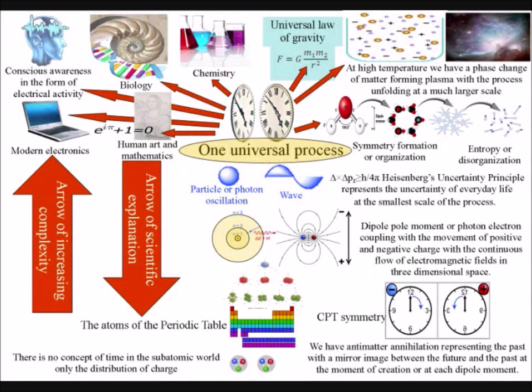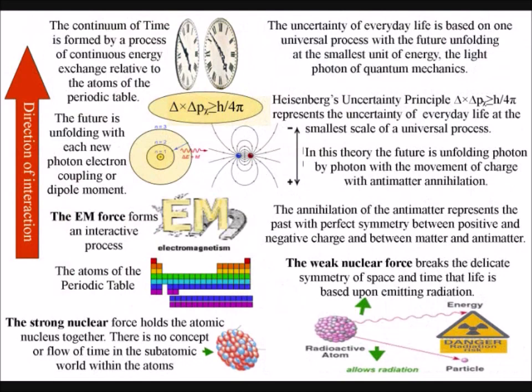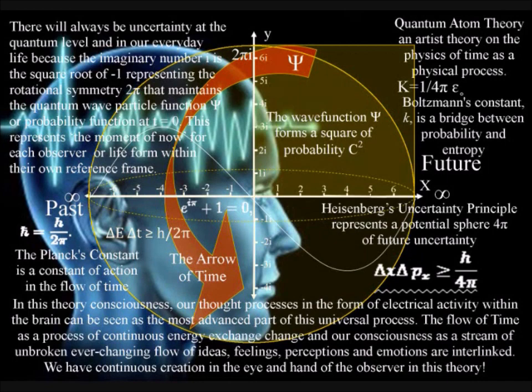Using the logic of physics, just as we use physics to explain electronics, if physics is the most fundamental science, then we should be able to explain everything as a physical process using physics. It should even be possible to explain conscious awareness and free will as a physical process.